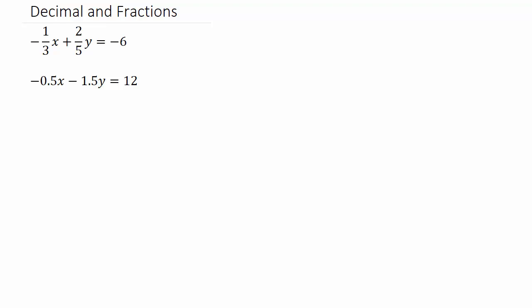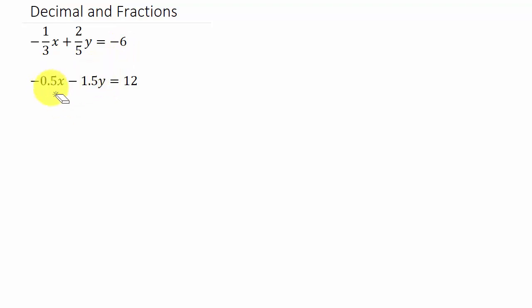First, we'll get rid of the fractions in the first equation by multiplying each term by the common denominator. And then in the second equation, we'll get rid of the decimals.